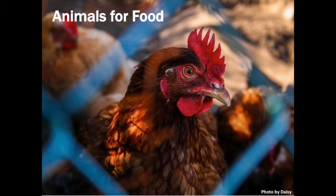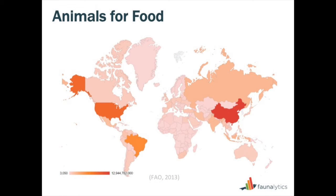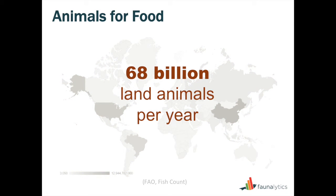For animals used for food, let's add a quick global perspective. This is a map based on data from the United Nations showing land animals only slaughtered by country. There are high concentrations in either the most populous countries, like China, or the most consumerist, like the United States. When you add up all that data, the estimate from the United Nations is 68 billion land animals killed per year for food across the globe — and that's arguably a very conservative estimate, since many countries under-report or don't report to the FAO dataset.